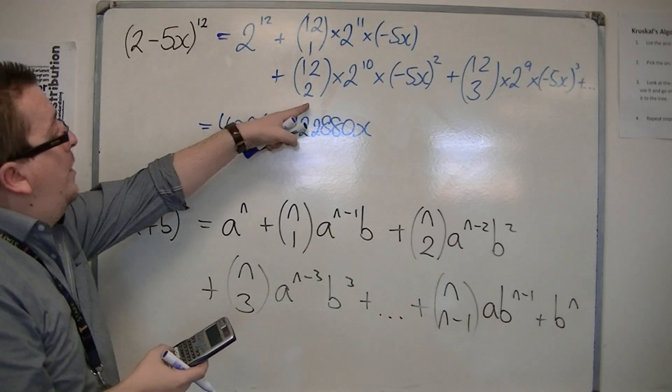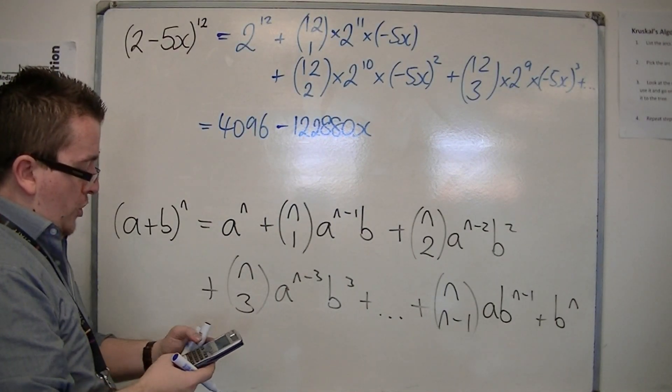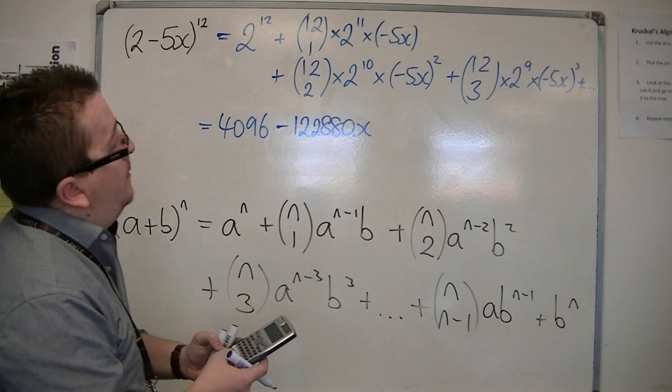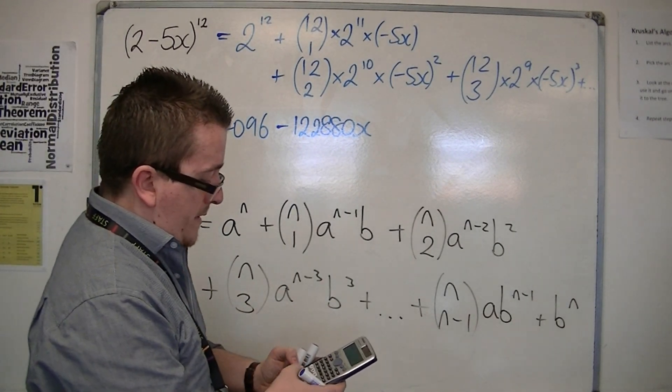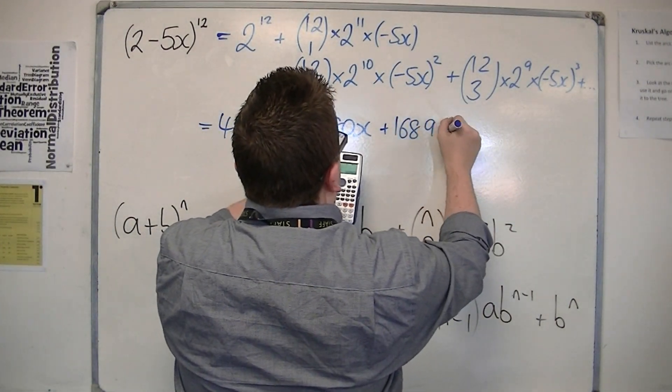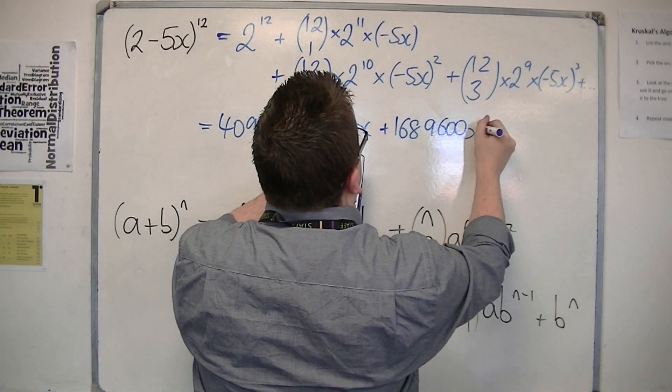Then we've got 12 choose 2. 12 choose 2, times $2^{10}$, times $(-5)^2$. So, that's 1,689,600$x^2$.